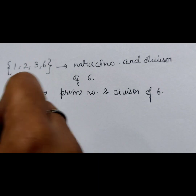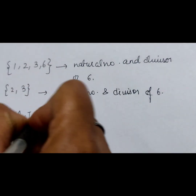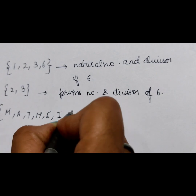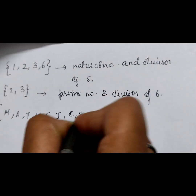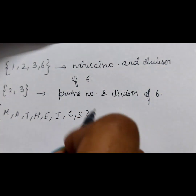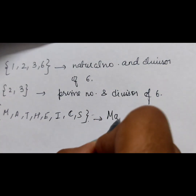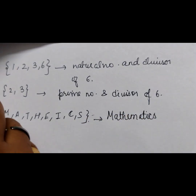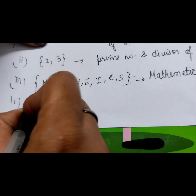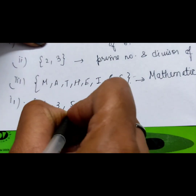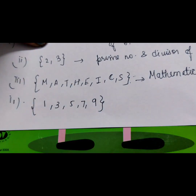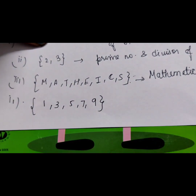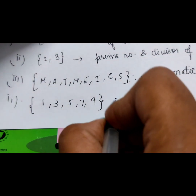The third one M-A-T-H-E-M-A-T-I-C-S — this is the set of letters of the word MATHEMATICS, so it matches with D: x is a letter of the word MATHEMATICS. The fourth one {1, 3, 5, 7, 9} — these are all odd numbers less than 10, so the fourth match is complete. Thank you for watching this video.